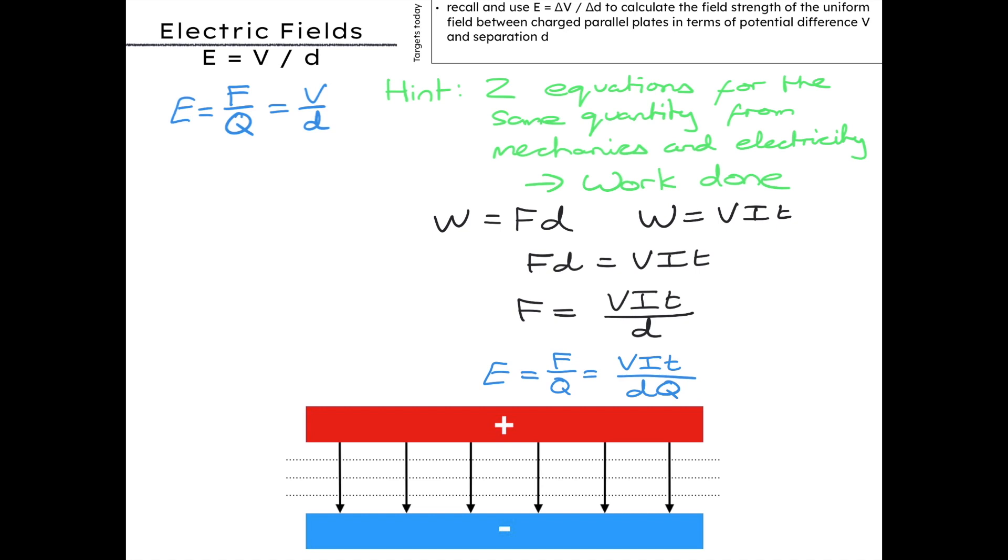Since Q equals It, we get E equals VQ over DQ. So canceling out those Qs, we get E equals V over D.